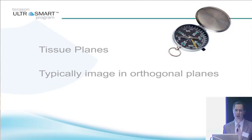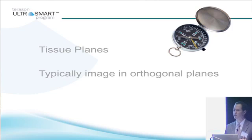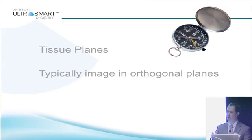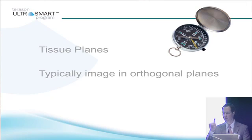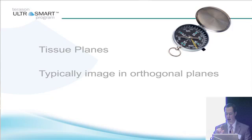If you get an MRI, you get a sagittal and an axial. If you're going to study something, you study it in two planes. The reason you do that is so you can construct a three-dimensional image in your mind and then develop that into your working three-dimensional image of what's going on.